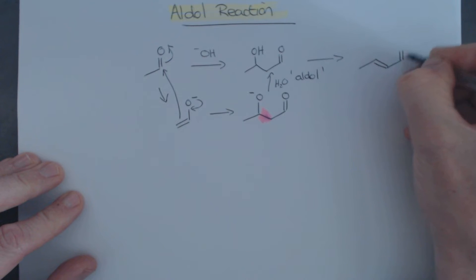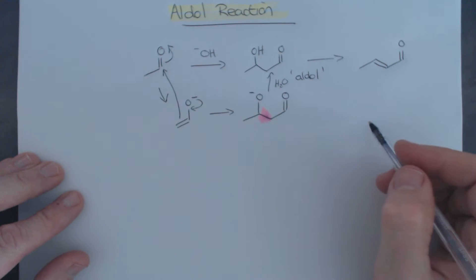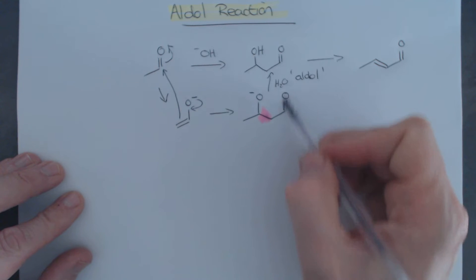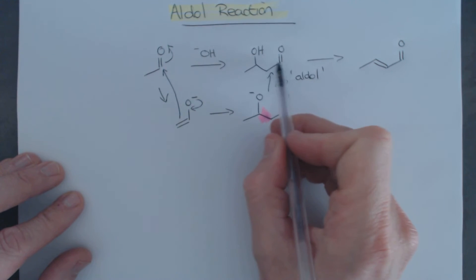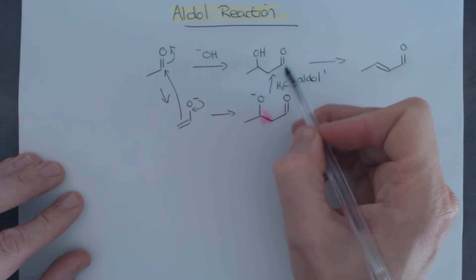The unsaturated aldehyde that looks like this, which, of course, in this reaction could be problematic because this itself could react again. But nevertheless, this elimination reaction is very typical for aldol products, which is an alpha-beta-hydroxycarbonyl compound.